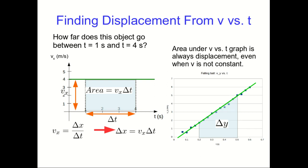So here's our falling ball data. And if we wanted to know what the displacement, the y component of displacement was of this ball between 0.2 seconds and 0.5 seconds, all we would need to do is find the area of that shape underneath vy versus t.